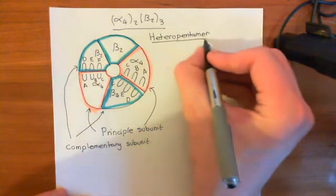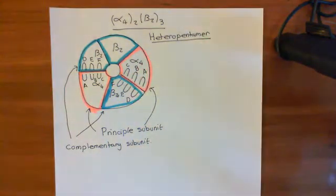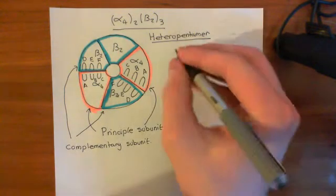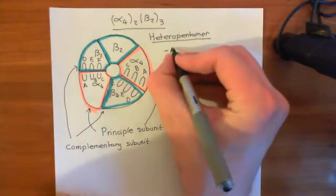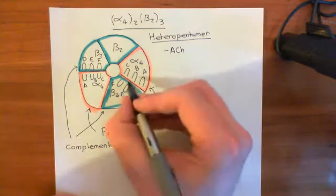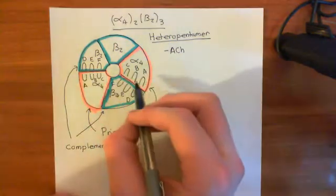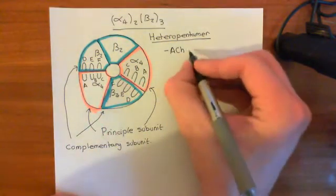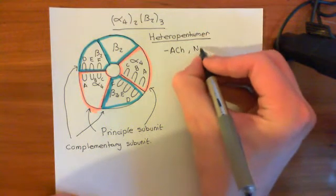Okay, so now let's have a look at the pharmacology of this alpha-4-2-beta-2-3 receptor. So basically, its agonists are acetylcholine, and it is agonised by nicotine. So acetylcholine will bind to these binding sites here and open the receptor, and also, so will nicotine.